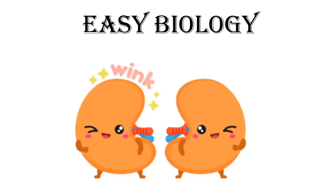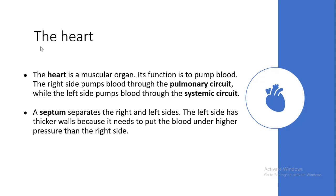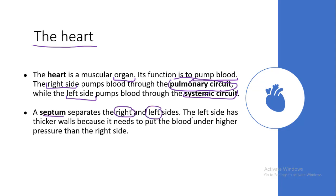Welcome to Easy Biology. The heart is a muscular organ. Its function is to pump blood — to send blood to the whole body. The right side pumps blood through the pulmonary circuit, while the left side pumps blood through the systemic circuit. So our heart has two main circuits, and a septum separates the right and left sides. The left side has thicker walls because it needs to put the blood under higher pressure than the right side.